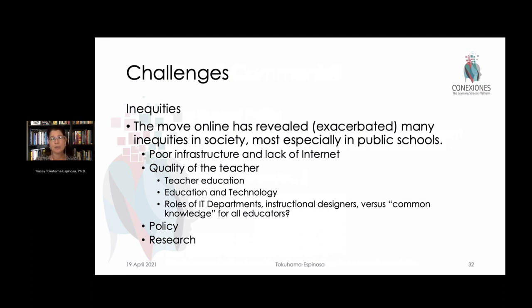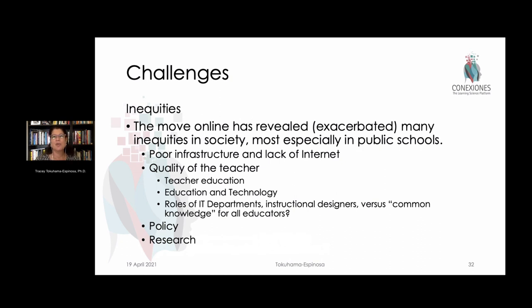The pandemic has exacerbated many challenges that already existed and shown us these inequities, especially in the public school setting. The OECD published in April 2021 that schools doing okay before the pandemic are still doing okay, and the ones who weren't are doing even worse. While intuitive, it's just not acceptable. We should think: is it possible to give everybody access to the highest quality teachers?